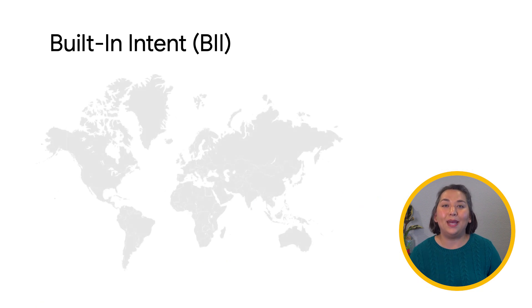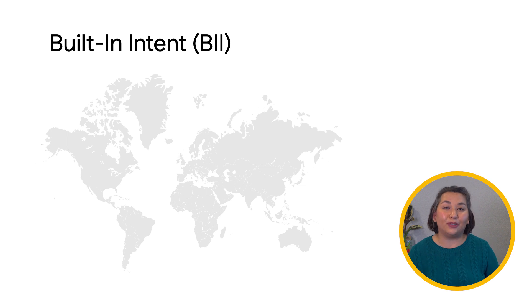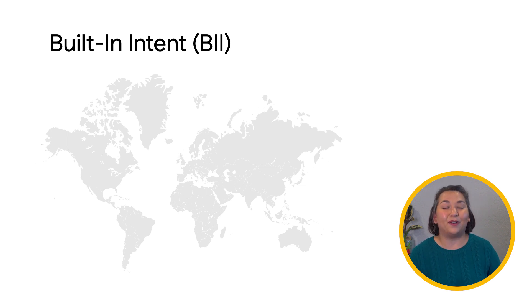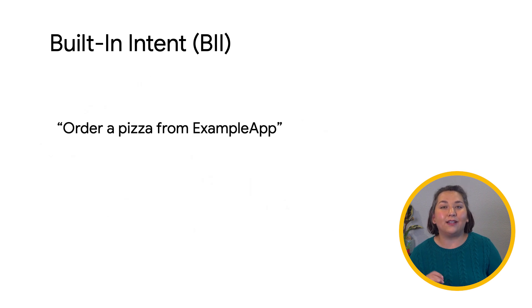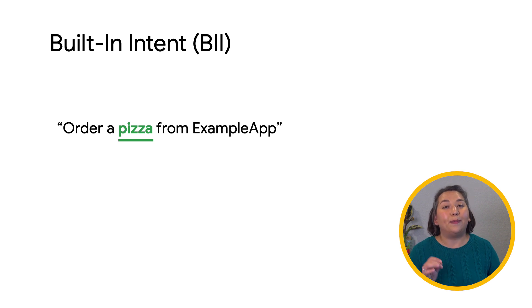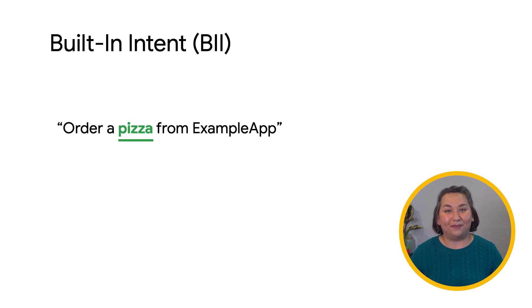BIIs already support many different languages, and we're always improving them. Because of this, as Google Assistant improves its language support, your app automatically benefits from these efforts. The majority of BIIs also have fields, which identify possible elements in a user's query that will be passed to your Android application as parameters. For this example, "pizza" will be passed as a parameter's value.